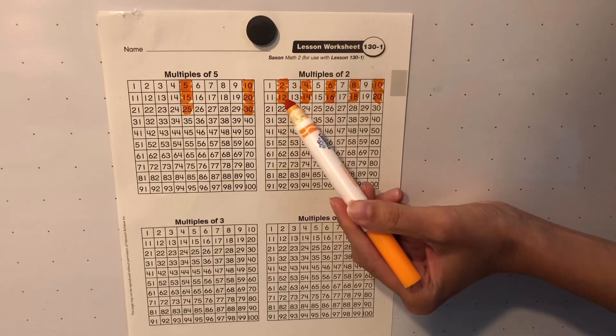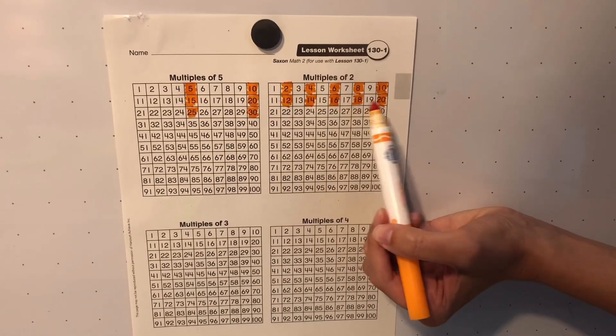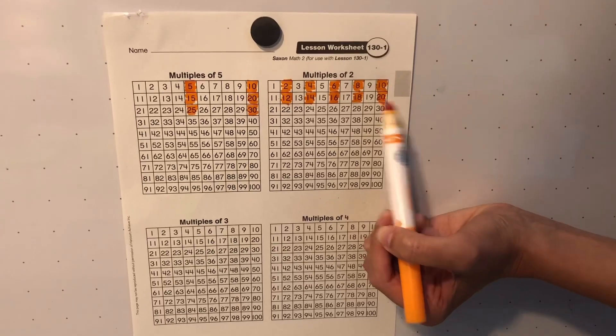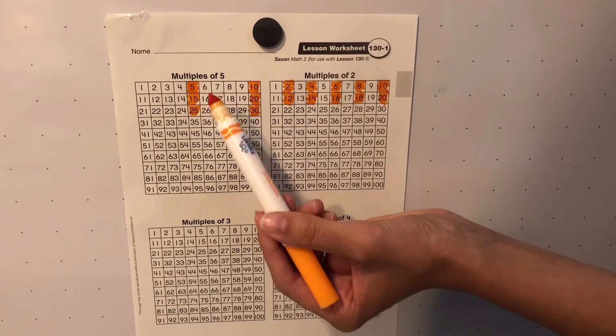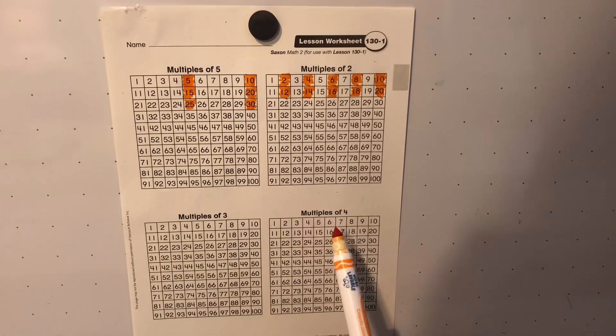So here again, you can see a different pattern is forming on our hundreds charts. Go ahead and complete the rest of this page on your own, finishing multiples of five, two, three, and four.